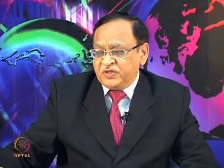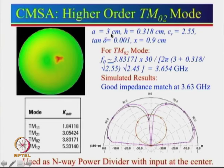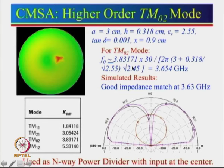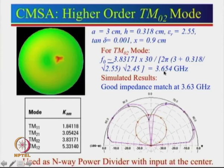The TM02 mode is generally not used for antenna applications, but has a very good application as an n-way power divider. With the same A = 3 cm, h = 0.318 cm, εr, tan δ, and x = 0.9 cm, KNM = 3.83 gives a calculated resonance frequency of 3.654 GHz. Simulation gives 3.63 GHz — an error of about 24 MHz, less than 1%.